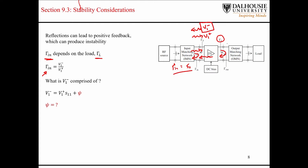But if there's a good match on the output — if the S12 parameter, which describes the transfer of energy from the output to the input, is very small — that's where we make the approximation that the input reflection coefficient is just the S11 parameter. But let's be more explicit and derive the analytical formula.